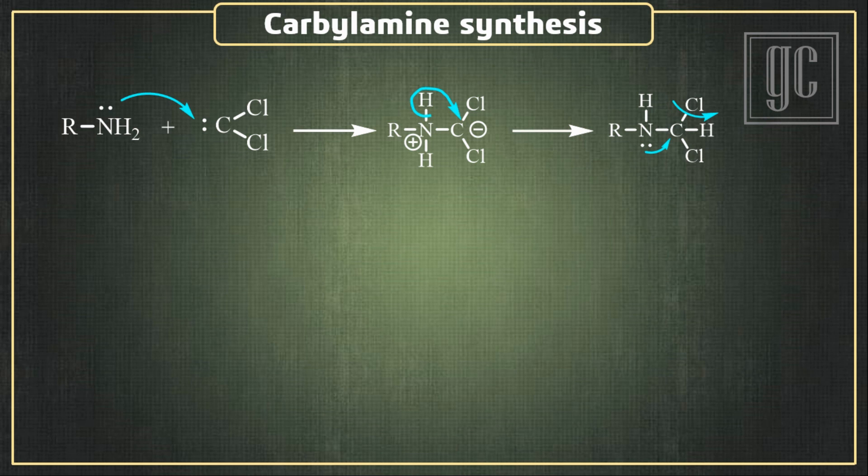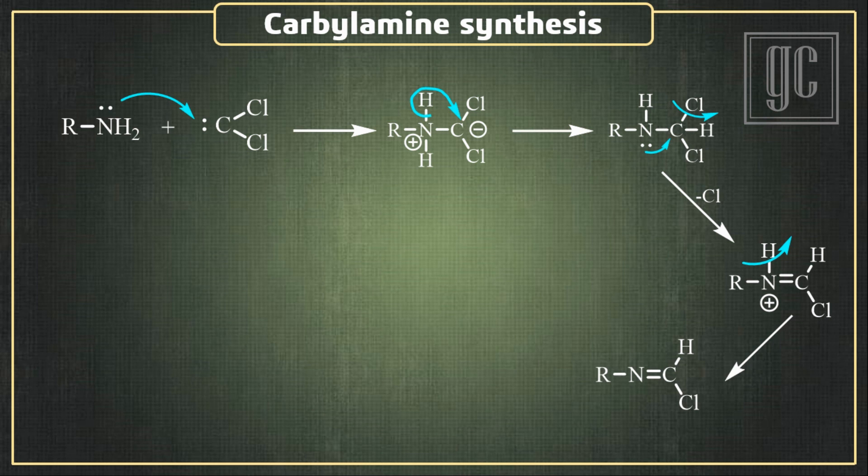As a result, one chlorine atom is removed. The generated positive charge is neutralized by elimination of one proton, and an imine is formed. Now in the presence of a strong base, one acidic hydrogen atom is removed and a carbanion is formed.